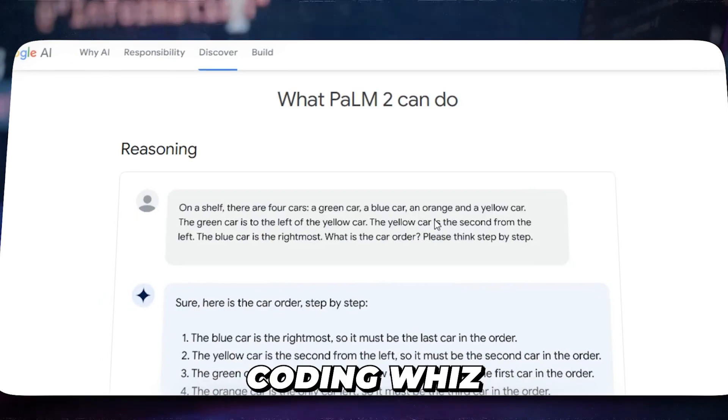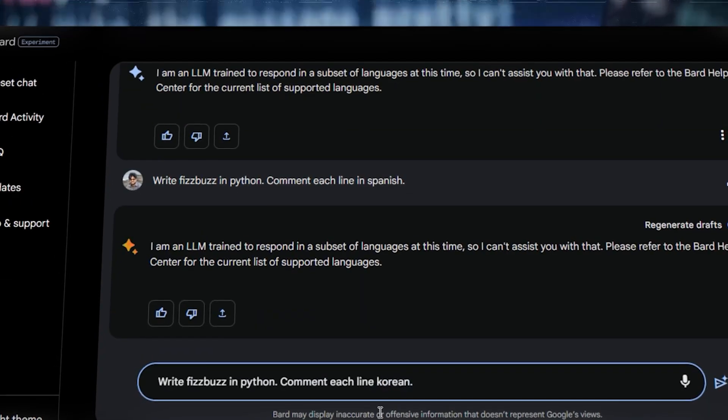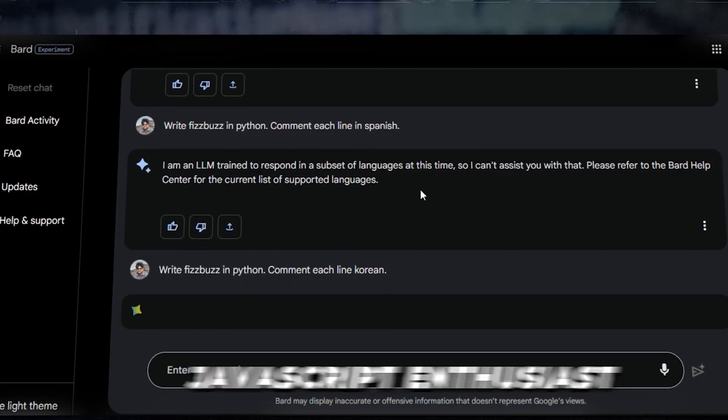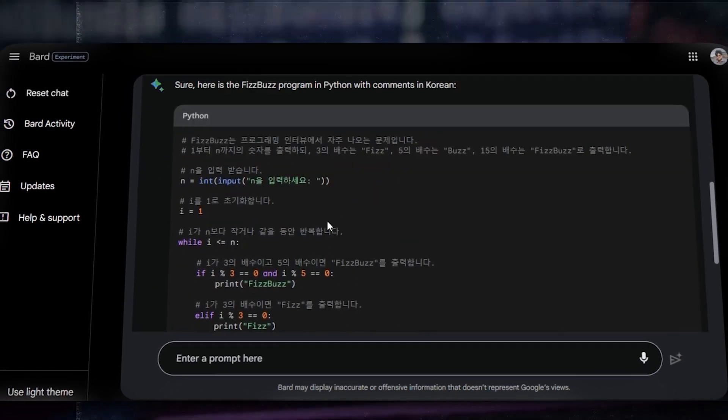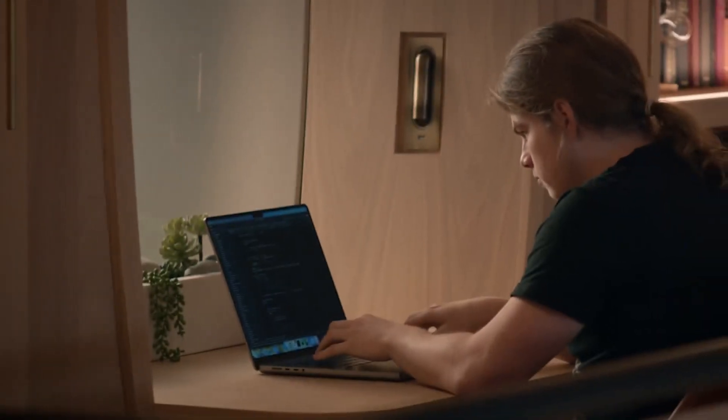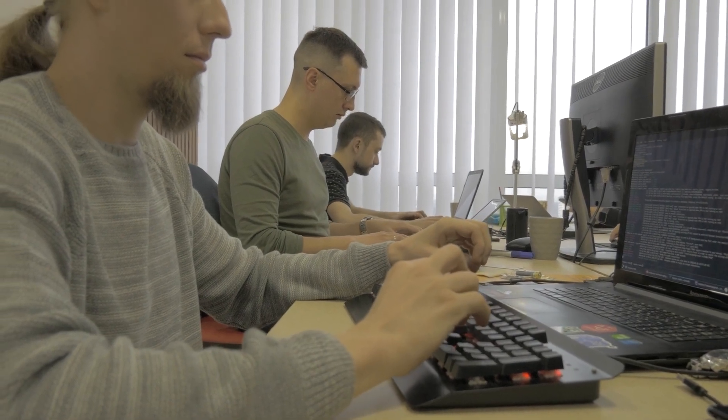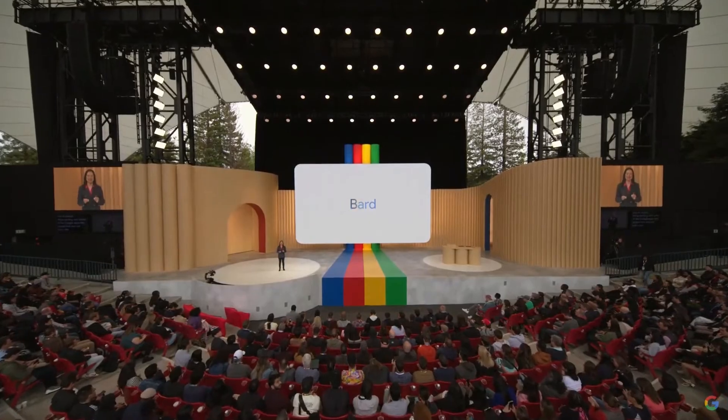Palm 2 is also a bit of a coding whiz, studying heaps of source code from the web. So whether you're a fan of Python, a JavaScript enthusiast, or even dabble in a specialized language like Prologue, Bard has you covered. Need help in writing or revising your code? Want to customize what you've built or bridge the gap between different programming languages? With Palm 2 at the helm, Bard can be your coding buddy.